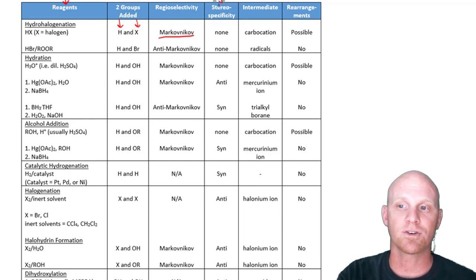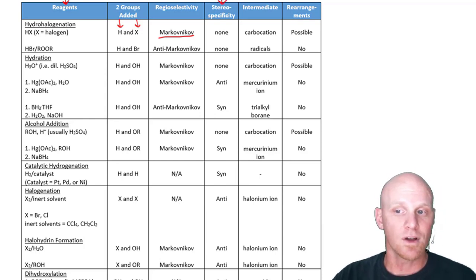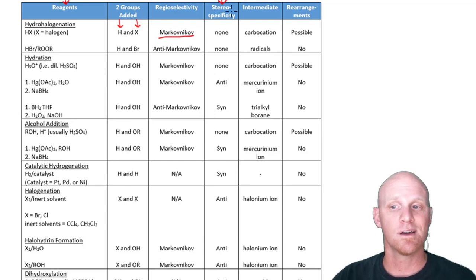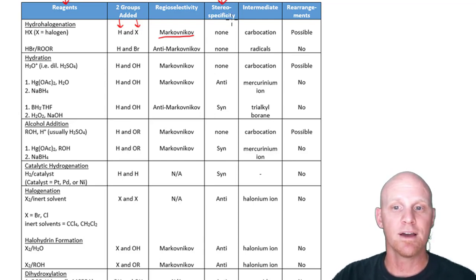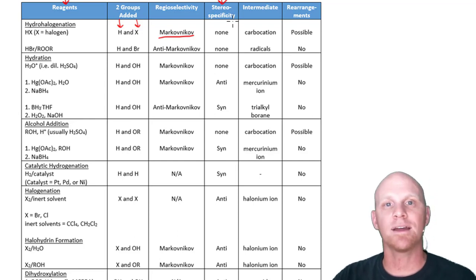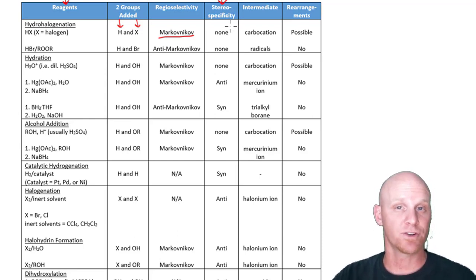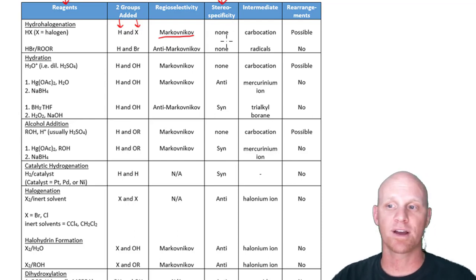Over here, I've put the stereoselectivity in the next column — whether it has none, or whether it's syn or anti. If it's syn addition, you're adding two things from the same side at the same time. If it's anti addition, you're doing backside attack on a bromonium ring. And if there's no stereoselectivity, you'll find that when you're adding the two groups, they're both adding to sp2 hybridized carbons, which are trigonal planar and flat, so you can add to either side.